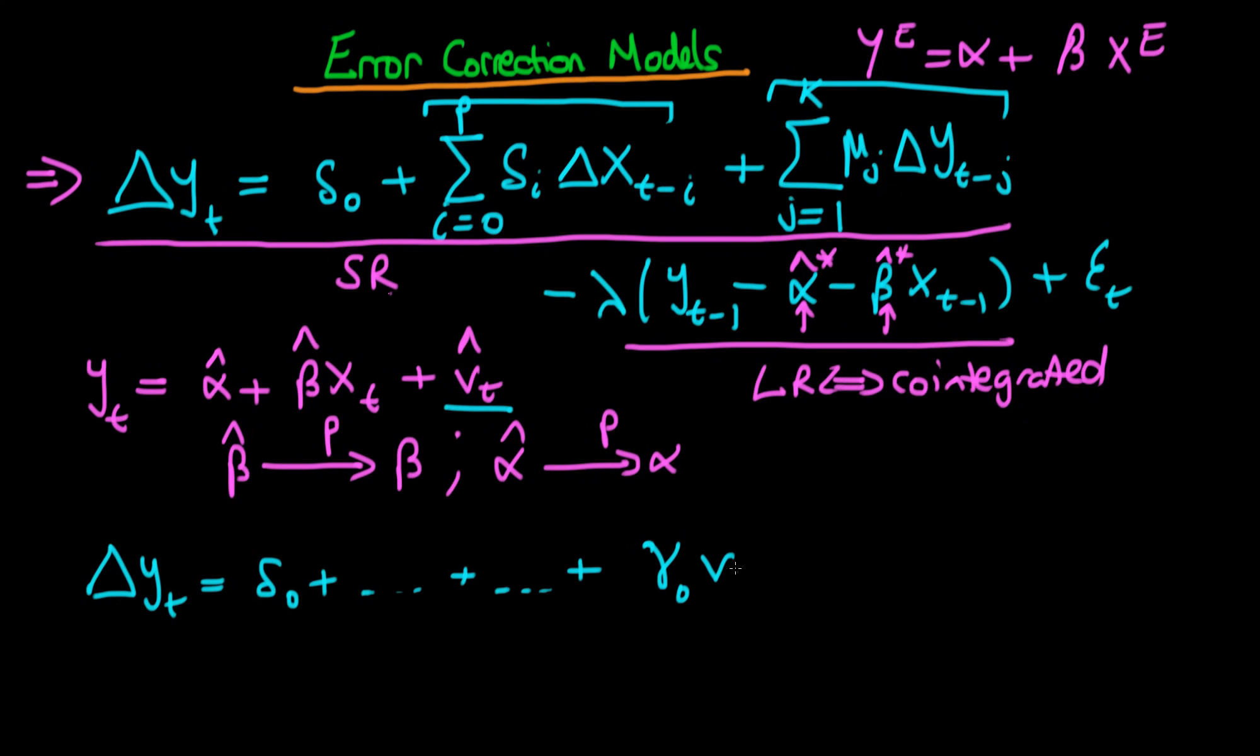And then I just regress that on the estimated residuals. So I have a regression coefficient gamma naught times the estimated residuals from this first-stage long-run estimated relationship. Then it turns out that the ordinary least squares estimator of the parameter lambda is just going to be equal to minus the least squares estimator of gamma naught. And to see that, it's just by comparison of the gamma naught with this minus lambda up here.